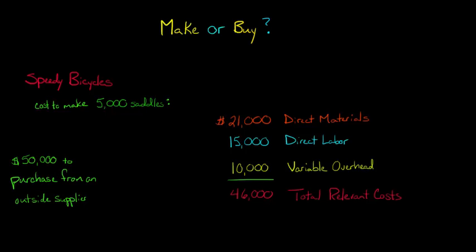In our last video, we talked about a company called Speedy Bicycles that manufactured bicycles and was trying to decide whether to continue manufacturing the bicycle saddles, which are also known as seats, in-house, or whether to purchase them from an outside supplier for $50,000. And we identified the total relevant costs of manufacturing in-house as being $46,000, which, since it was less than the cost to purchase from an outside supplier, suggested we should continue manufacturing the seats in-house instead of buying them from the outside supplier.